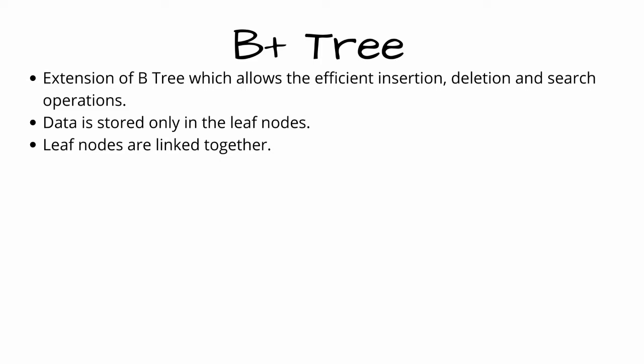It is an advanced form of self-balancing tree in which all the values are present in the leaf level. So this is the major difference between the B tree and the B plus tree. In the B plus tree, the data is stored only at the leaf nodes. But in the case of B tree, the data is stored in the leaf nodes, internal nodes and the root node.